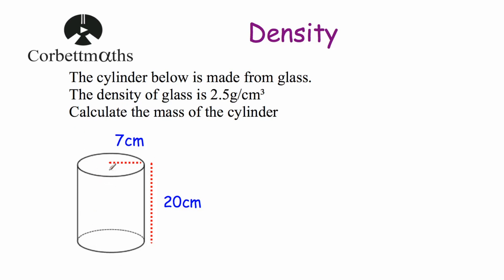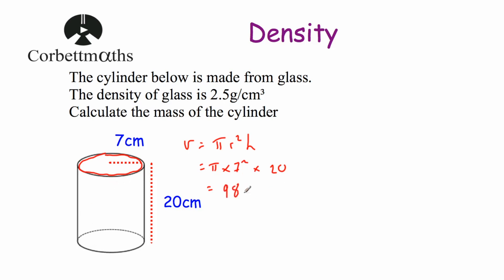To find the volume of the cylinder, we use pi r squared times the height. So the volume equals pi r squared h. We do pi times the radius, which is 7, so 7 squared, multiplied by the height of 20. Pi times 7 squared times 20 gives us the volume of the cylinder, which equals 980 pi, or in decimal form 3078.7608... centimetres cubed.